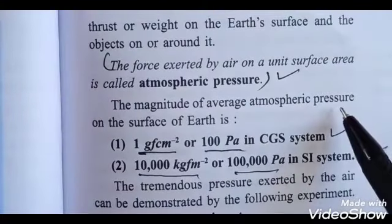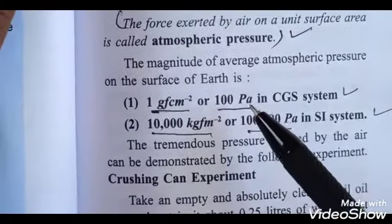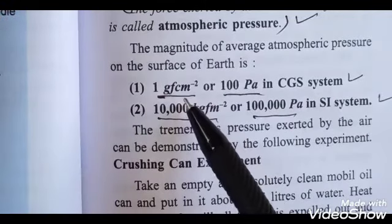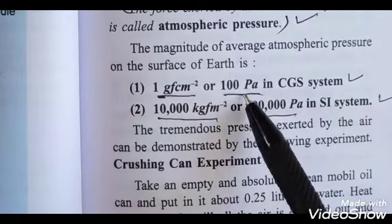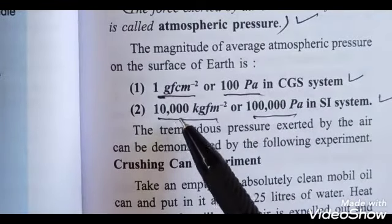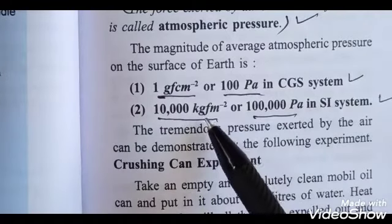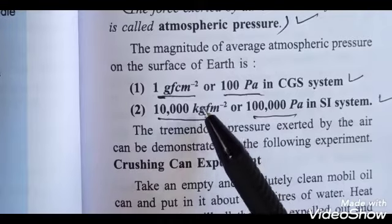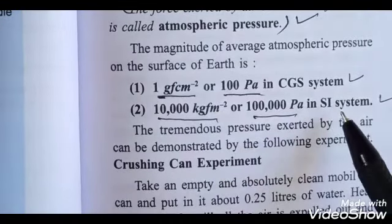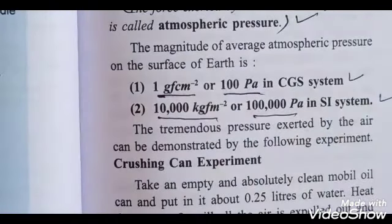The magnitude of atmospheric pressure on the surface of Earth is: in the CGS system, it is 1 gram force per centimeter square, which on calculation is equivalent to 100 Pascal. In the SI system, it is 1000 kg force per meter square, which converts to 1 lakh Pascal. These are the values of atmospheric pressure.